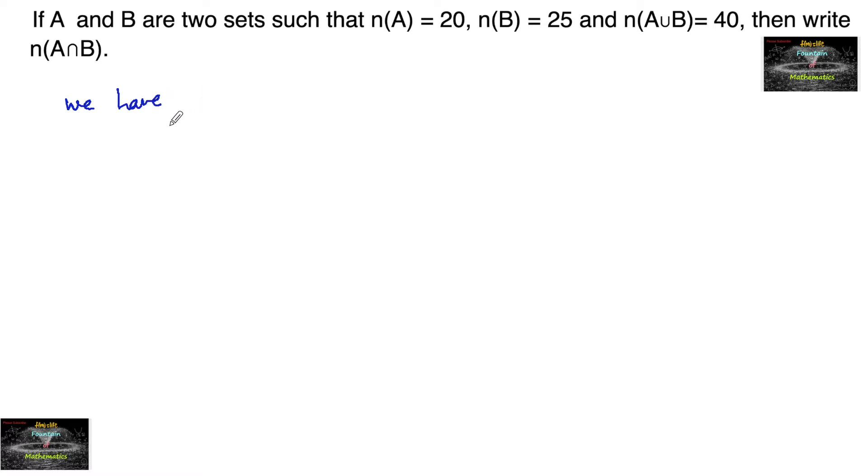We have a relation between n(A) and n(B) related to union and intersection. n(A∪B) = n(A) + n(B) - n(A∩B).